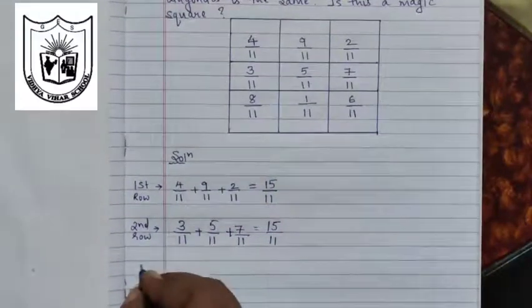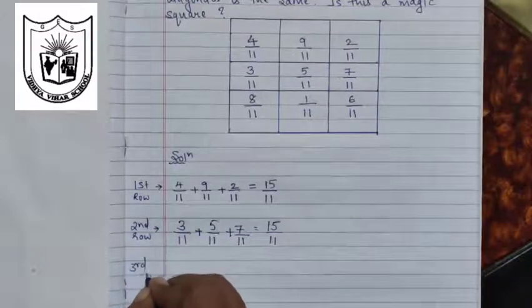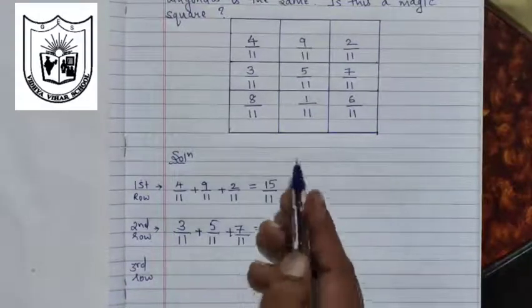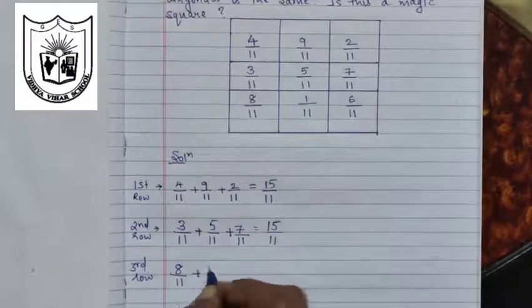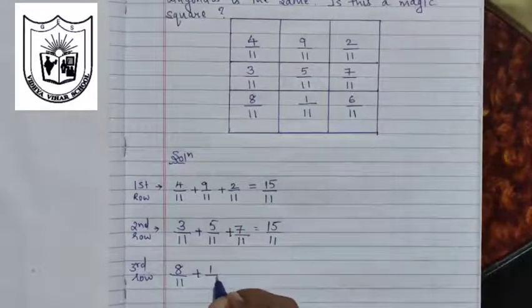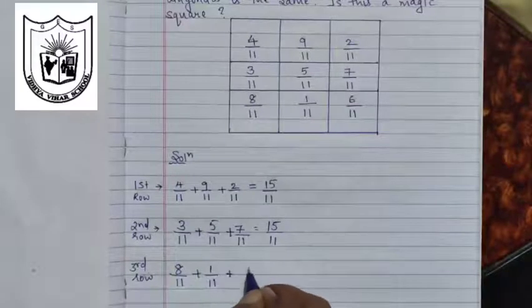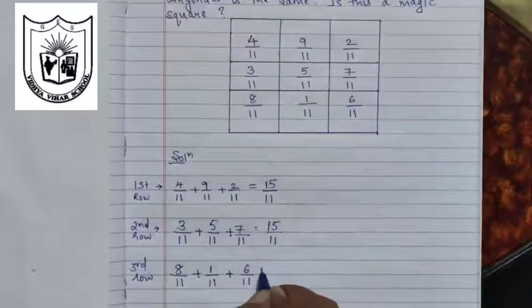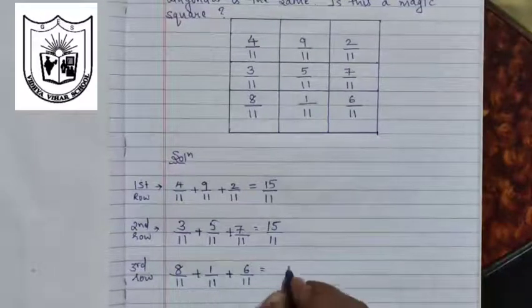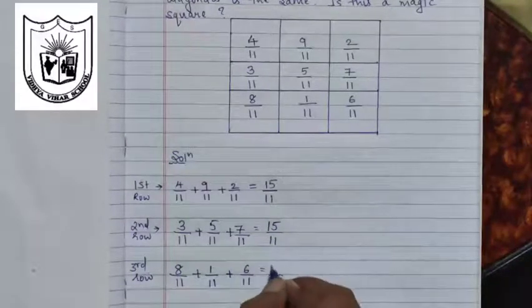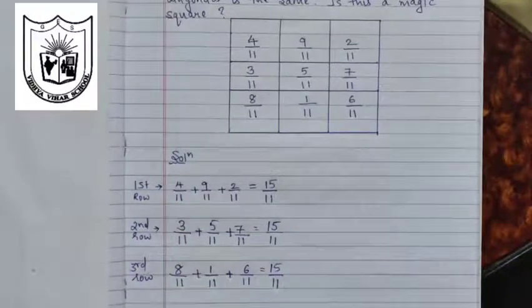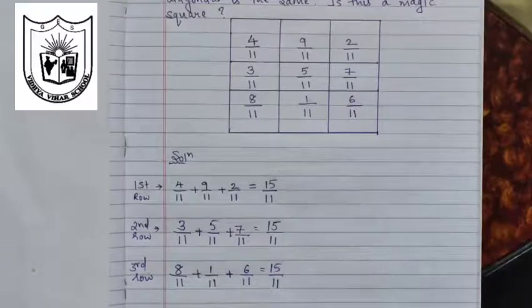Let us now check the third row. The fractions are 8 upon 11 plus 1 upon 11 plus 6 upon 11. The denominator is common, so we write it once. 8 plus 1 is 9, plus 6 is 15. So along all three rows, after adding the fractions, we have got the same answer, that is 15 upon 11.